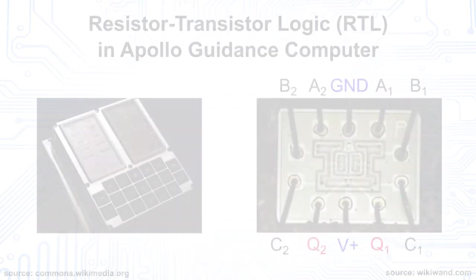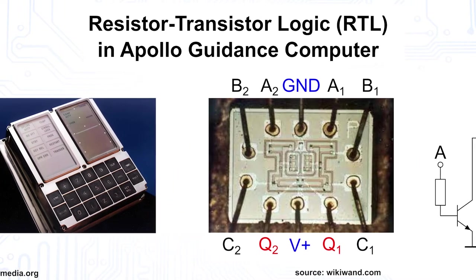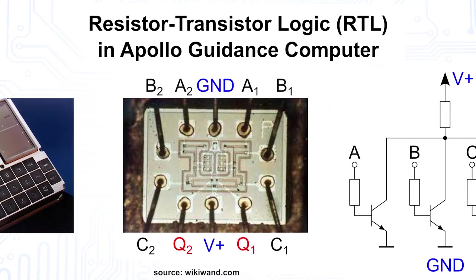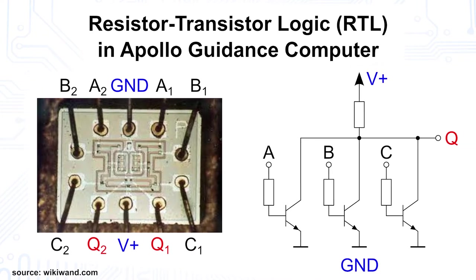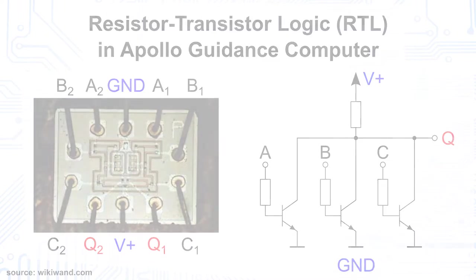Logic circuits similar to this one but with bipolar transistors were used for the moon landing in the Apollo guidance computer in the 1960s. This resistor-transistor logic, or RTL for short, had some significant drawbacks. One was that these circuits consumed a lot of power, since current always flows in one of the two logic states.